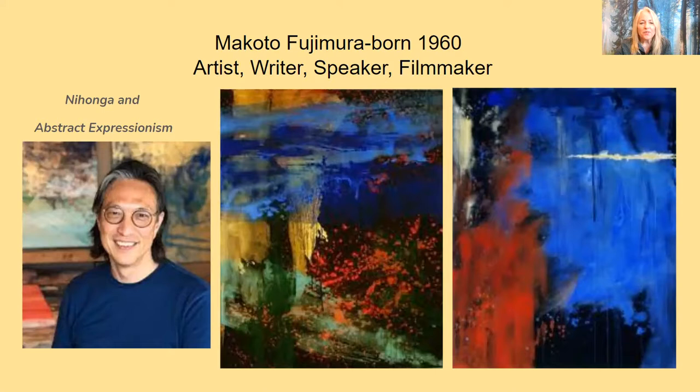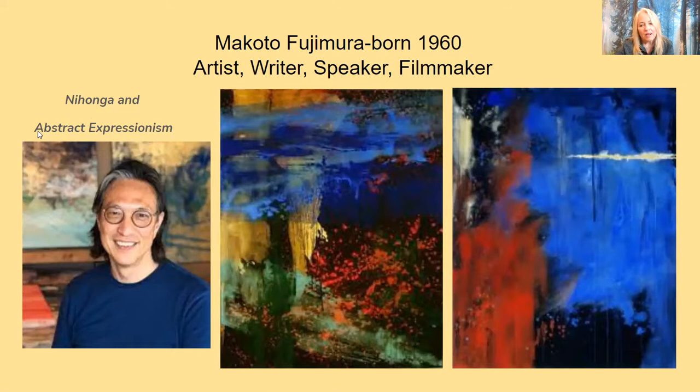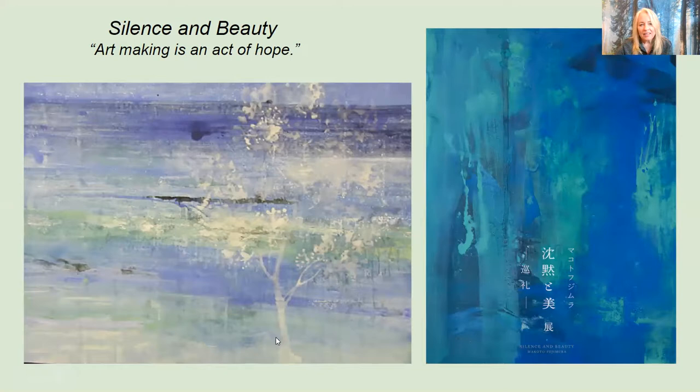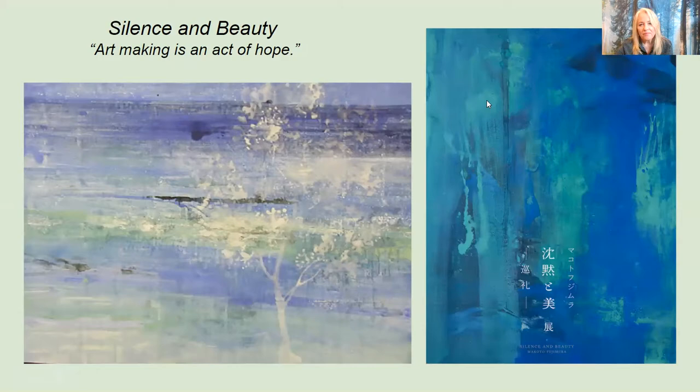His themes are very much about meditation, silence, quiet, beauty, trauma, and recovering from trauma from events in the world. His Japanese influence is called Nihonga, which is classic Japanese art. The other definition of his artwork is called abstract expressionism. 'Silence and beauty — art making is an act of hope.' And here you see a beautiful painting that is definitely a Japanese influence.